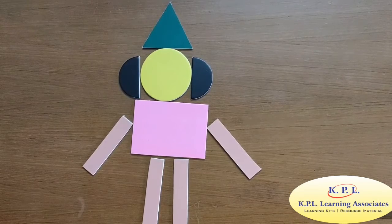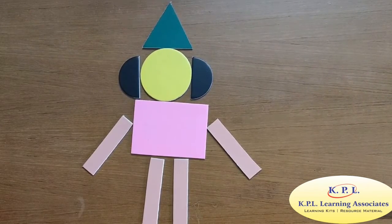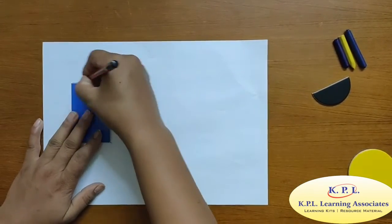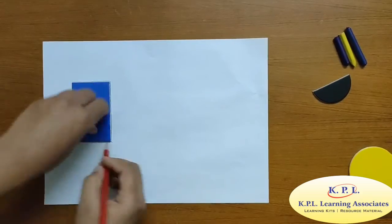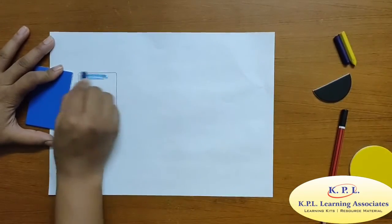Beautiful kit for pre-writing skills activities like tracing can be used as stencil for drawing and colouring. Here I am tracing a rectangle. Let's colour the rectangle with blue colour.